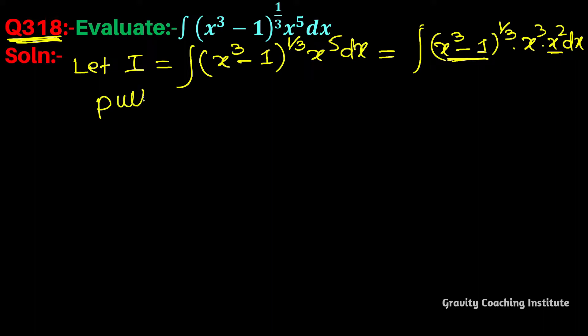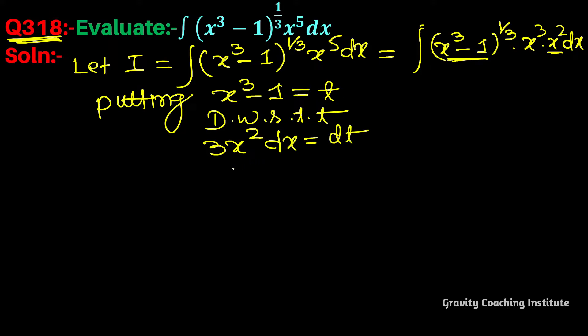Putting x³-1 = t, now differentiate with respect to t. The differentiation gives 3x² dx = dt, so x² dx = (1/3)dt.